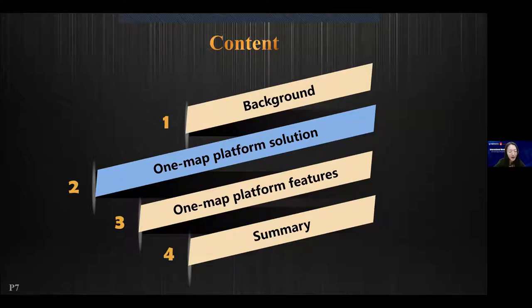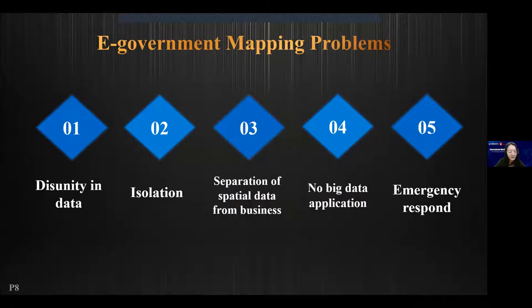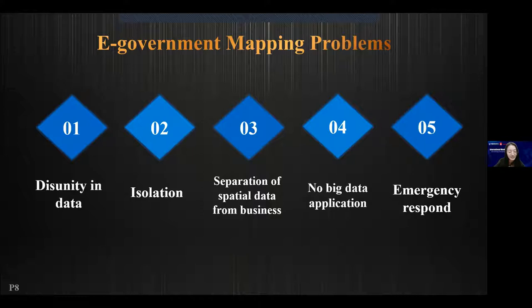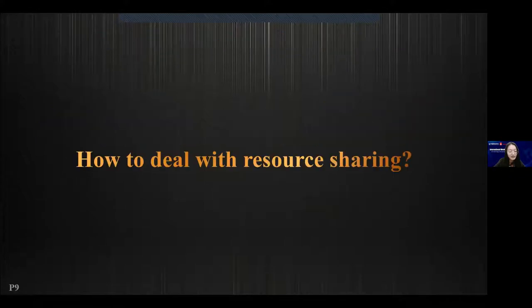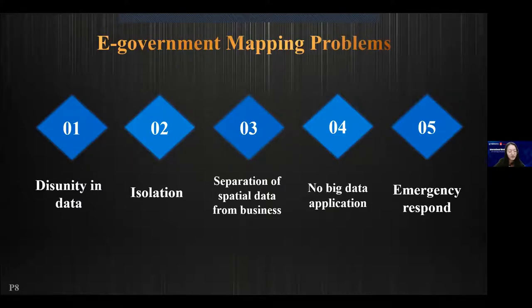Let's figure out how we can design a good OneMap platform. During the setup of the OneMap platform, we will meet several problems: disunified data standards, isolation between different departments, spatial data separated from business data, and systems that couldn't adapt to big data or respond quickly to emergency situations. About 40% of projects have requirements for map sharing in Chinese cloud information projects, so OneMap can be the key foundation to address these problems.